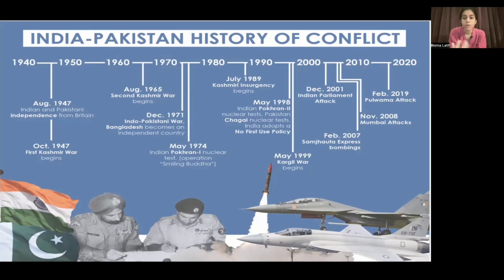Pakistan had a policy to resolve the Kashmir issue first, while India had a policy of ending terrorism first. After that, in 1998 both countries tested their nuclear weapons. India then adopted an NFU — No First Use — policy, meaning that until you are attacked by a nuclear weapon from an enemy state, you are not allowed to use nuclear weapons against them.